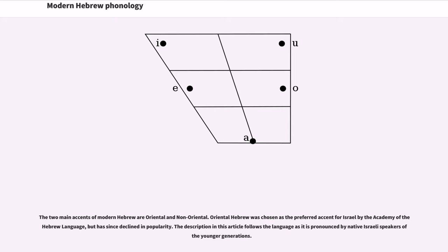The two main accents of modern Hebrew are Oriental and non-Oriental. Oriental Hebrew was chosen as the preferred accent for Israel by the Academy of the Hebrew Language, but has since declined in popularity. The description in this article follows the language as it is pronounced by native Israeli speakers of younger generations.